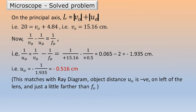We now use the tube length L, which in the ray diagram is the sum of the absolute VO plus UE. So, here I have used the modulus because the sign convention does not apply when we are taking a scale and measuring L. So, 20 is equal to VO plus 4.84, which we just found out. Therefore, VO is 15.16.